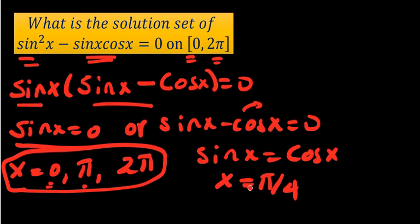The other one, in the second quadrant, sine is going to be positive but cosine will be negative so it doesn't work. But in the third quadrant, both of them will be negative. So what is the related angle of 45 degrees in the third quadrant? It is π + π/4.